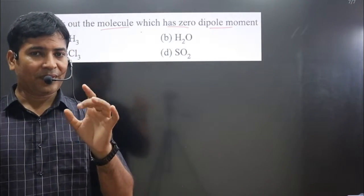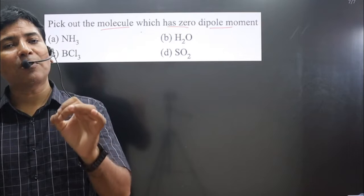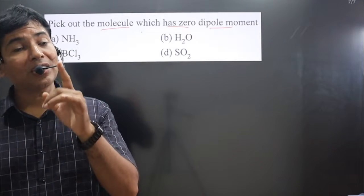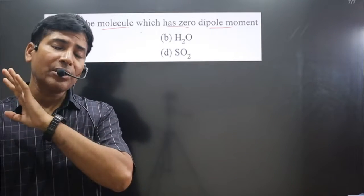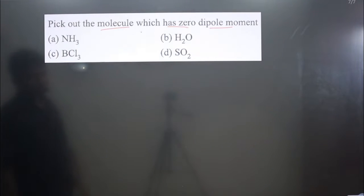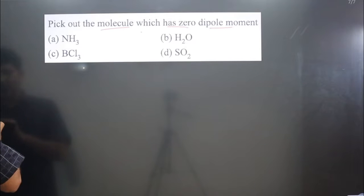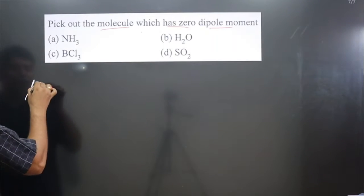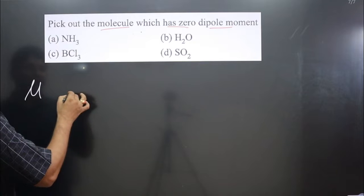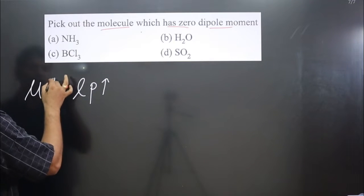If the central element is having a lone pair, its dipole moment will not be zero — it will be non-zero, meaning some polarity will be there. Also, dipole moment is directly proportional to lone pairs: as the number of lone pairs increases, dipole moment also increases.